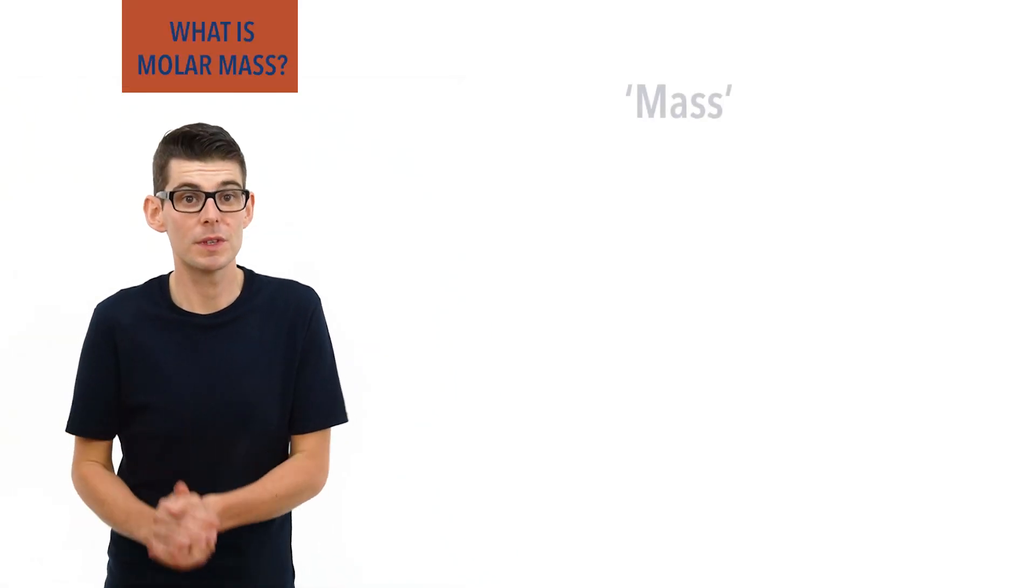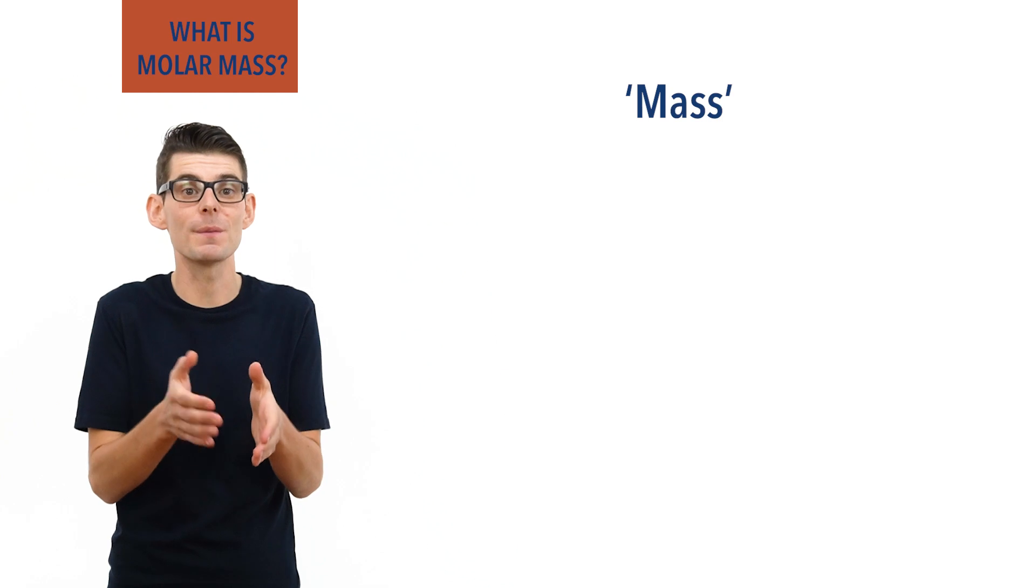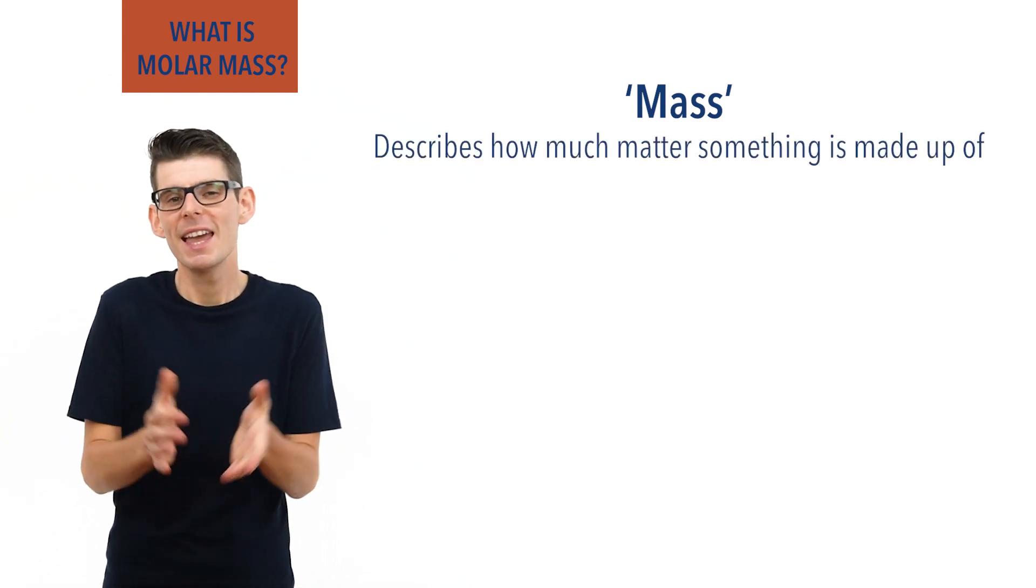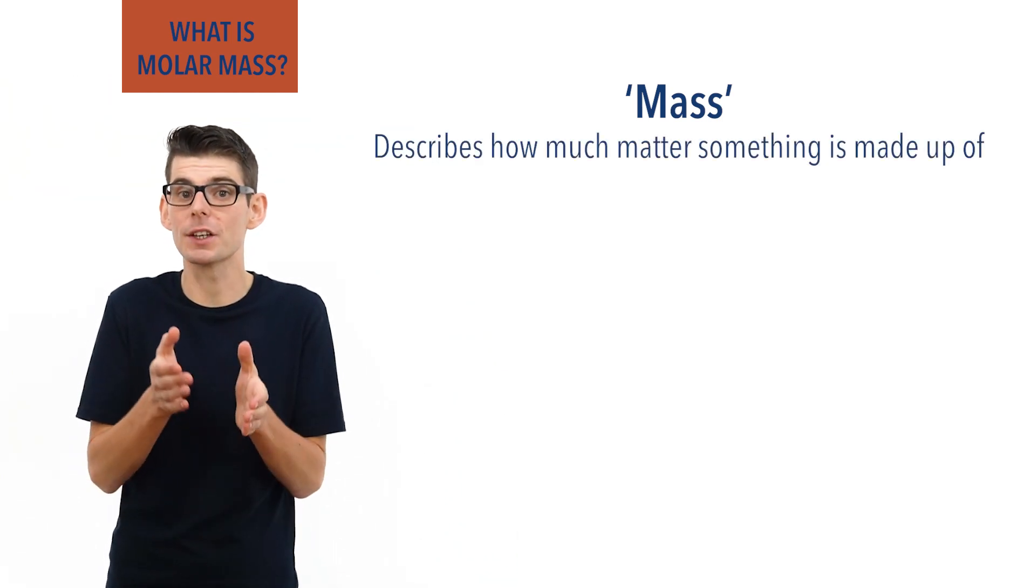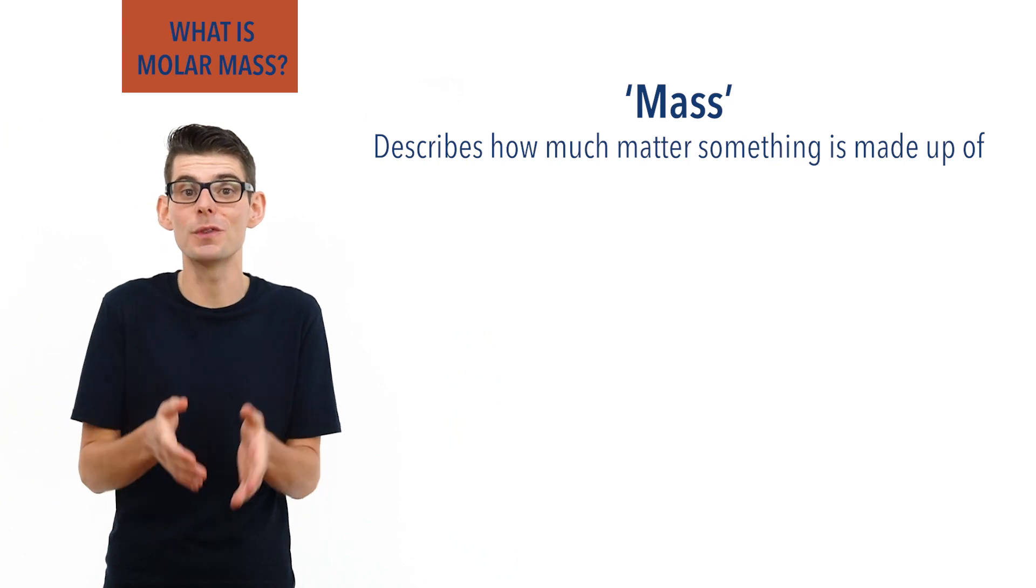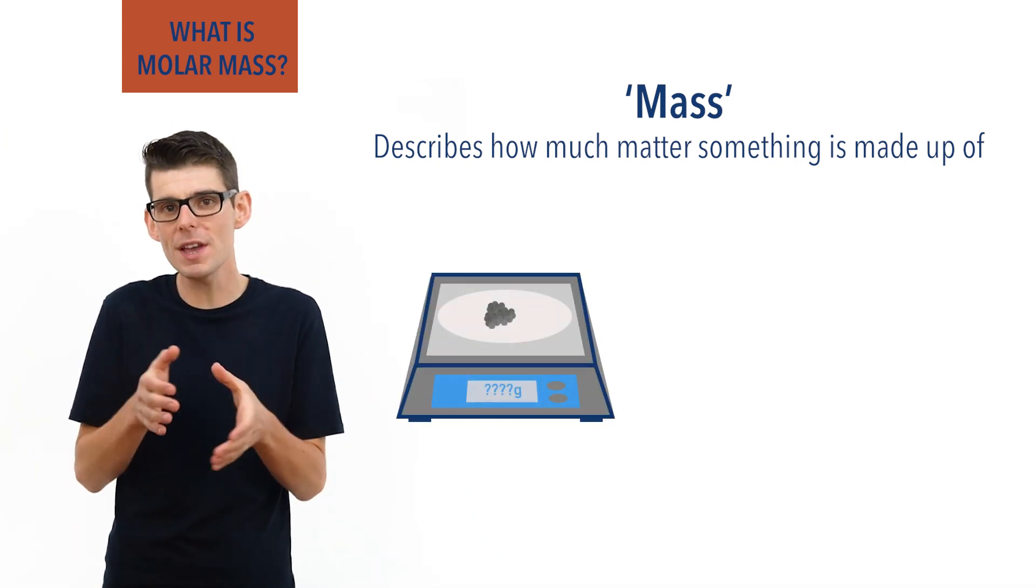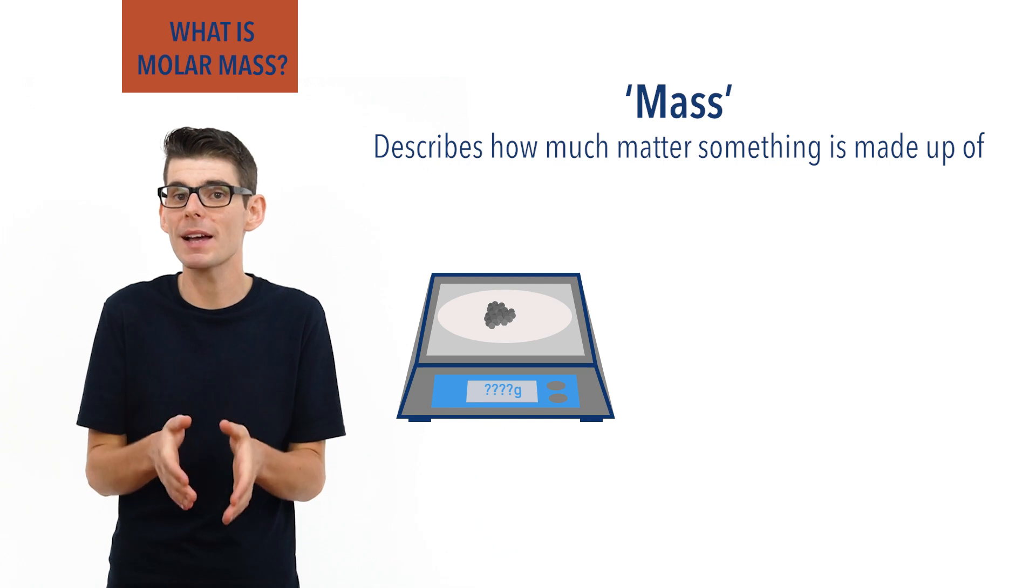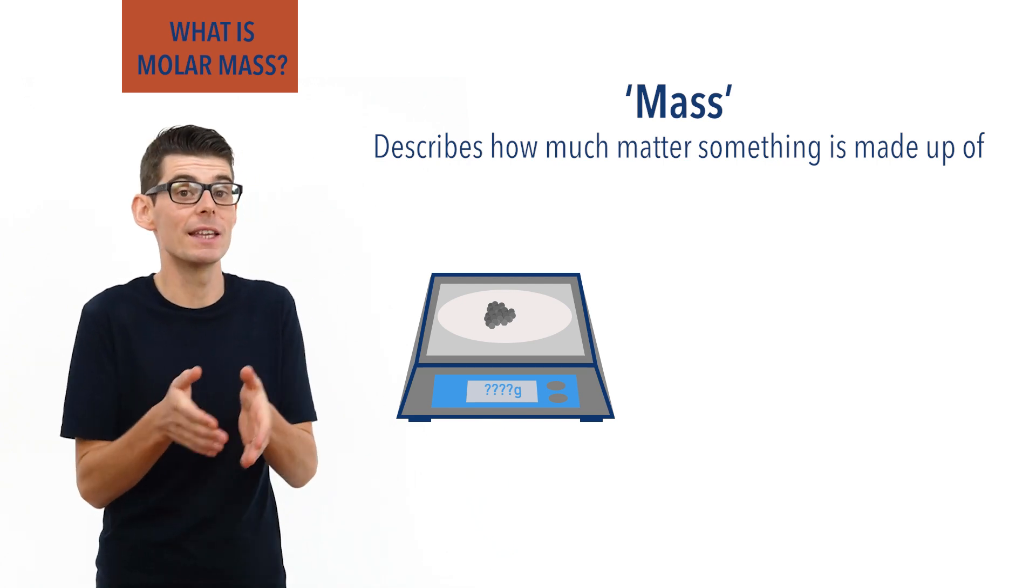Mass is a measurement used to describe how much matter something is made up of. In chemistry, we know that matter comes from atoms, and therefore when we measure the mass of something, we are really measuring the total mass of all the atoms present in the sample.